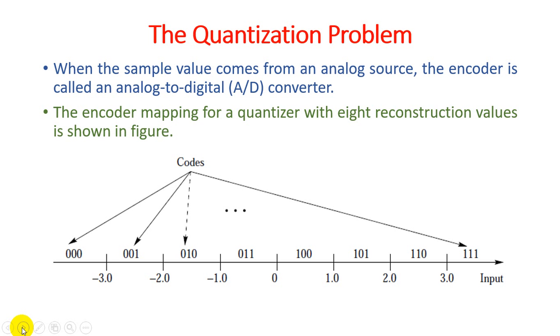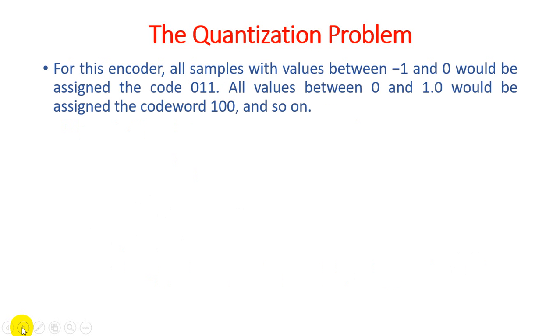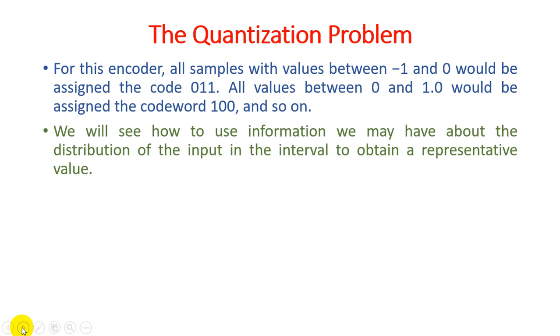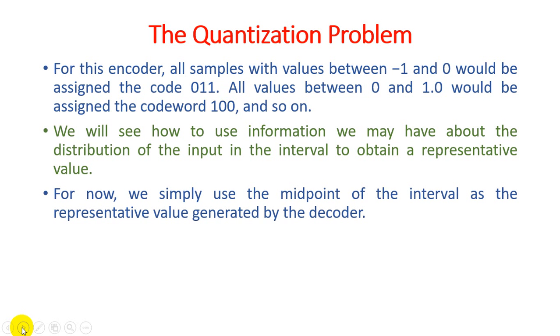I will show you how to use any information we may have about the distribution of the input in the intervals to obtain representative values. We have to decide that if we have a unique code like zero-one-one, then the value of minus one to zero would be found, because it is one of the quantization problems. For now, we simply use the midpoint of the intervals as the representative value generated by the decoder.